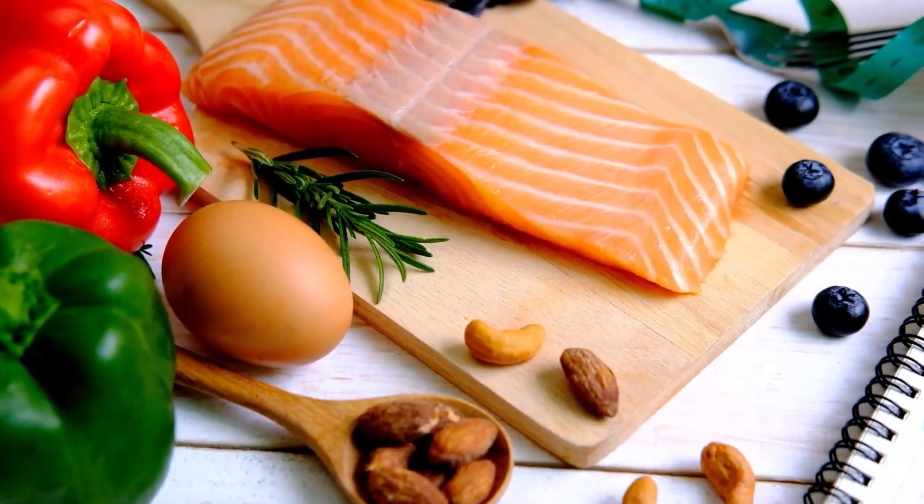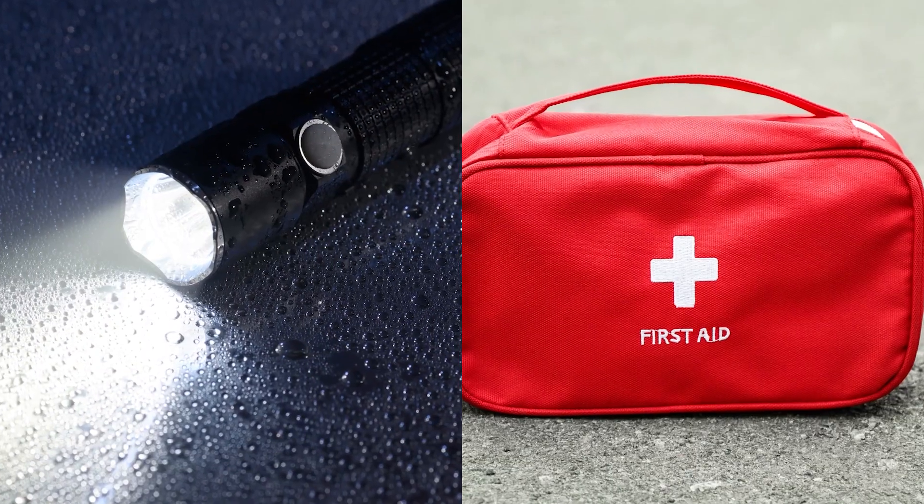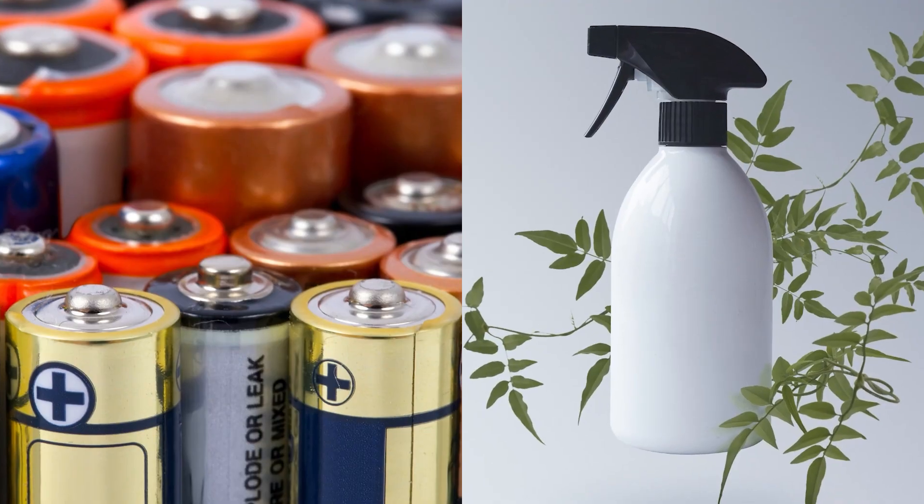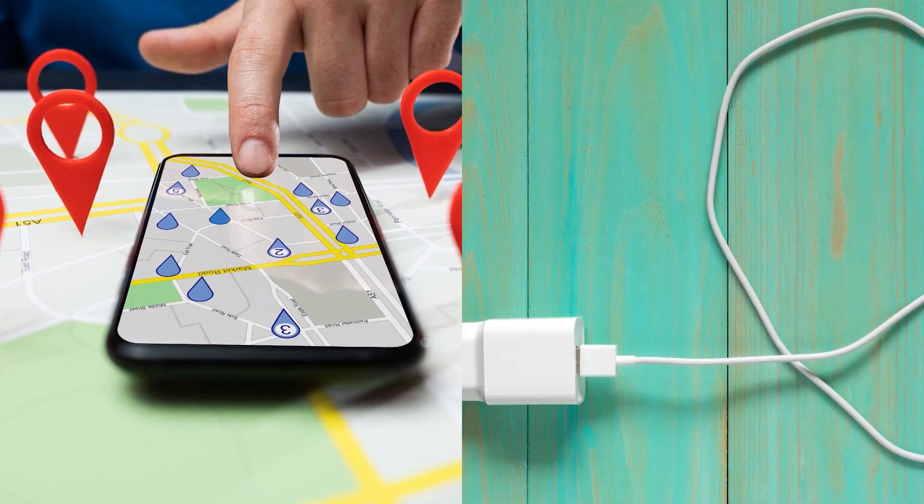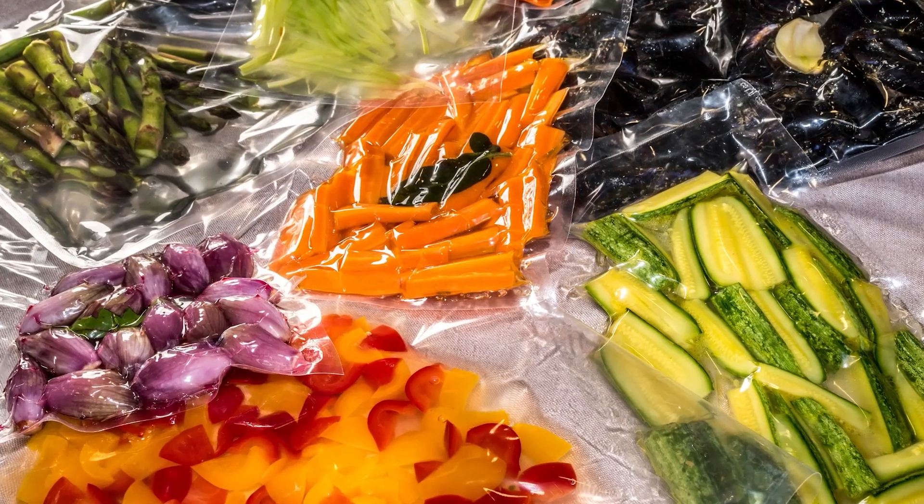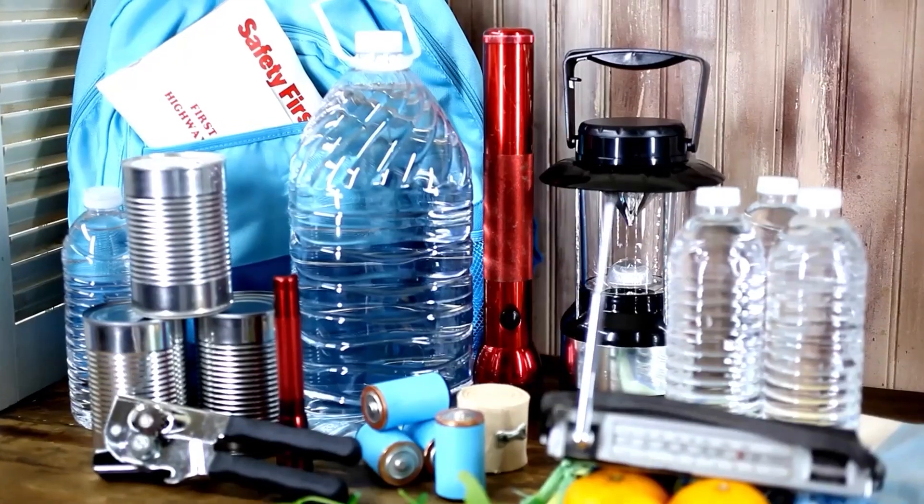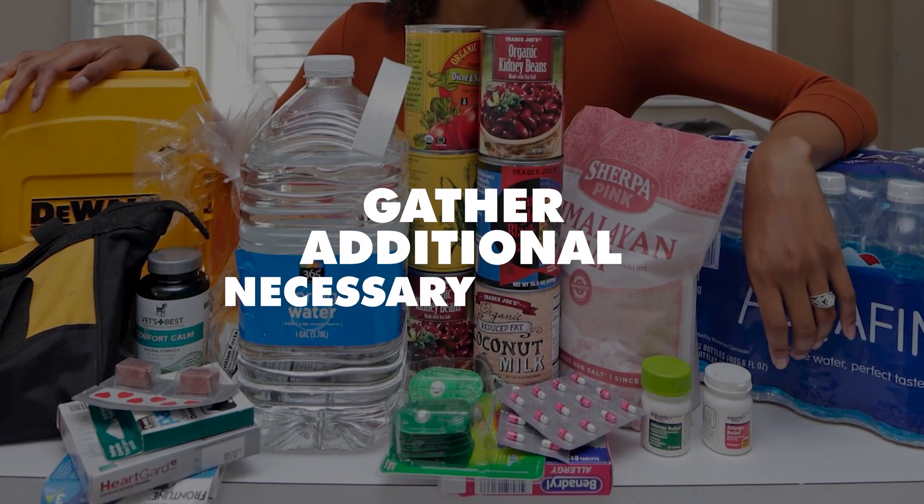Suggested items for an emergency preparedness kit include water, at least one gallon per person daily, food, a three-day supply of non-perishable items, battery-powered or hand-crank radio with NOAA weather radio alerts, flashlight, first aid kit, soap, disinfectant, extra batteries, whistles, dust mask, wrench or pliers, local maps, cell phones with chargers, matches and flares. Consider protecting sensitive items in airtight plastic bags and ensure the kit is accessible to everyone.